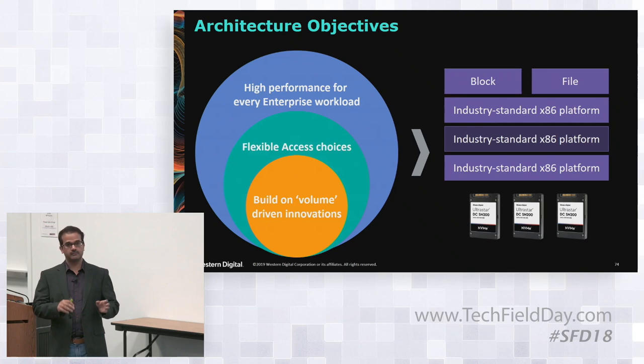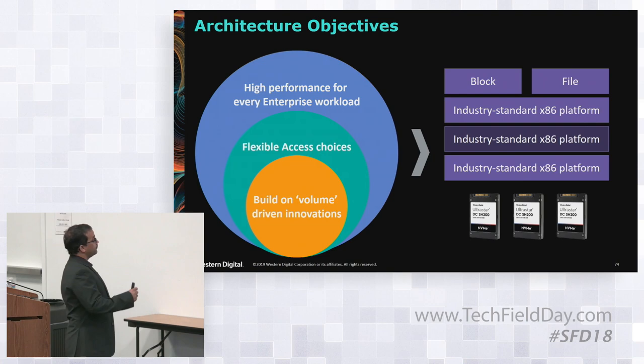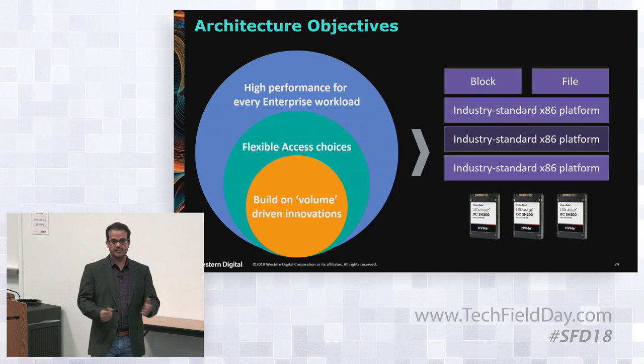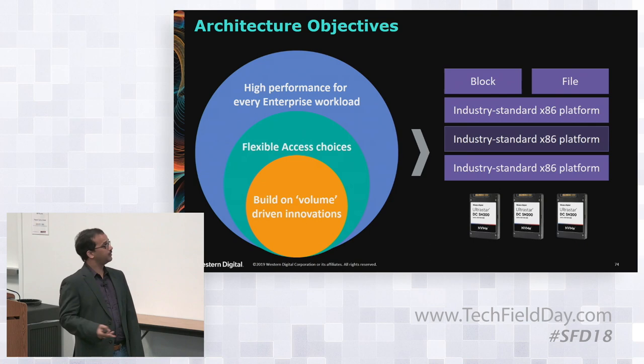We want to build our products on commodity components, commodity hardware, which is available easily. It provides scale and quality. We don't want to put restrictions on the customer regarding what access choice they will have. It's the customer who decides whatever way they want to access. They can use FC, SCSI, NFS, SMB, or in the future anything — RDMA, Fabric, or S3. It's their choice.